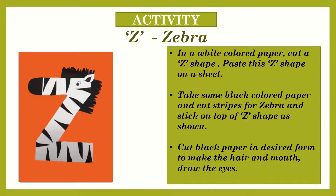Activity: Z for Zebra. In a white colored paper, cut a Z shape. Paste this Z shape on a sheet. Take some black colored paper and cut stripes for the zebra and stick on top of the Z shape as shown. Cut black paper in the desired form to make the hair and mouth and draw the eyes.